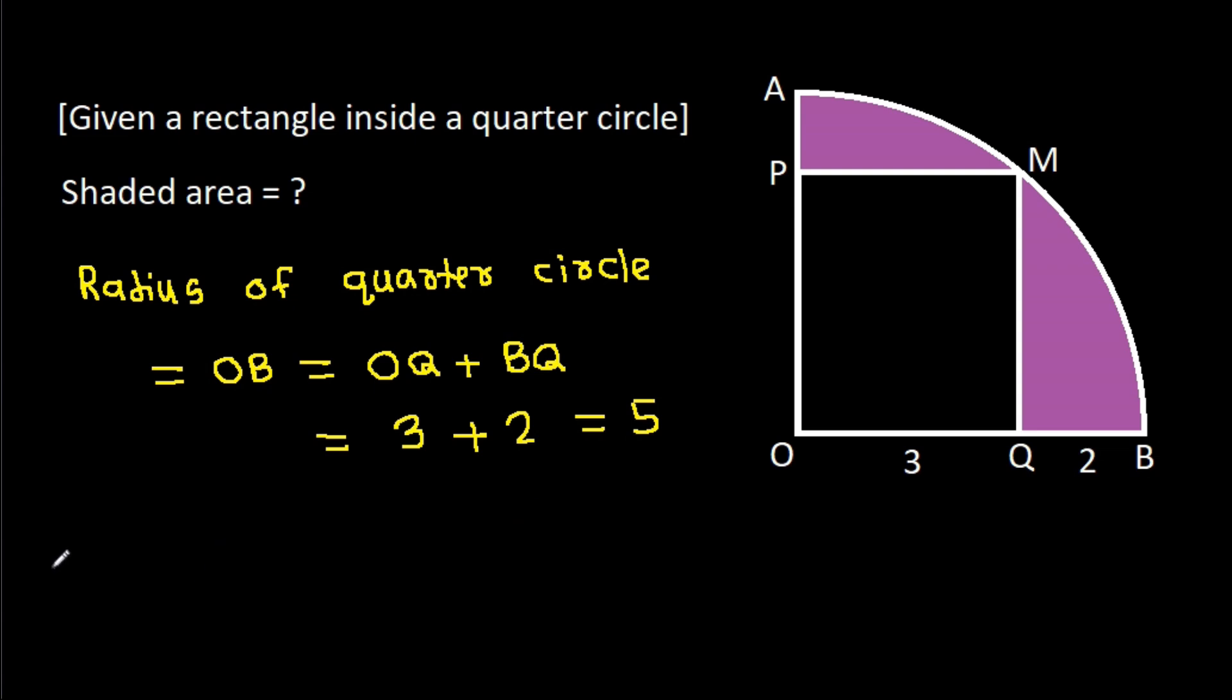Also, OM is the radius of the quarter circle, so it will be 5.